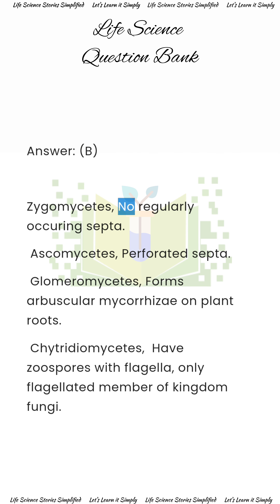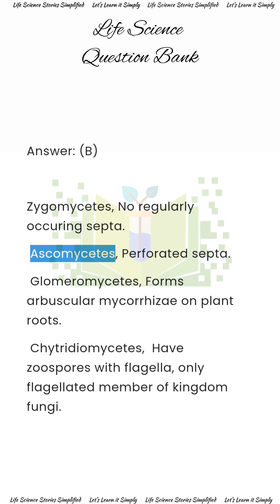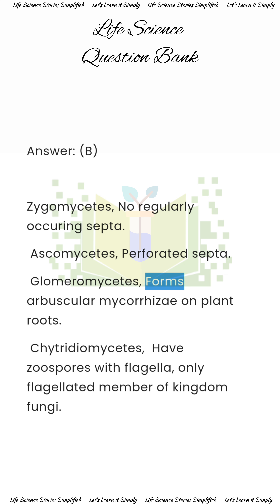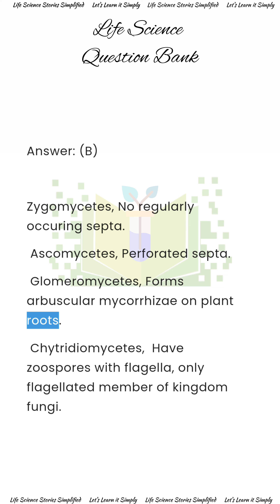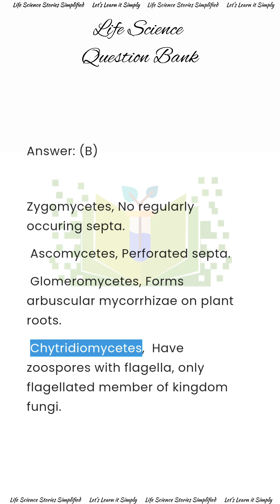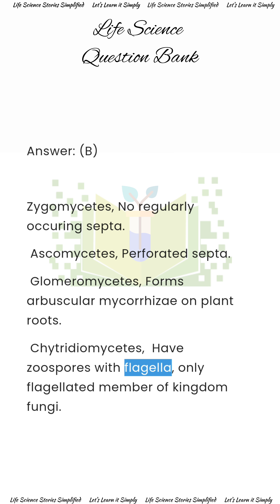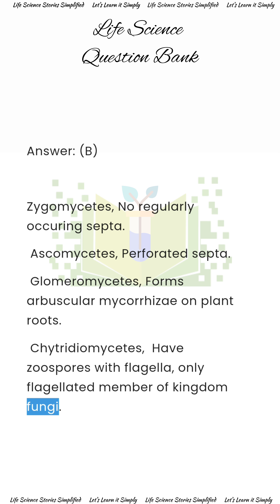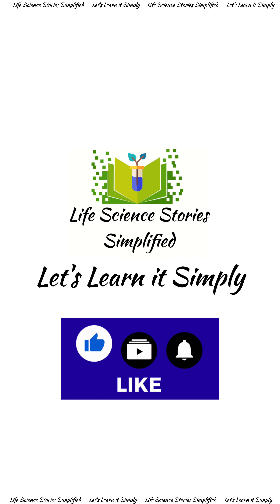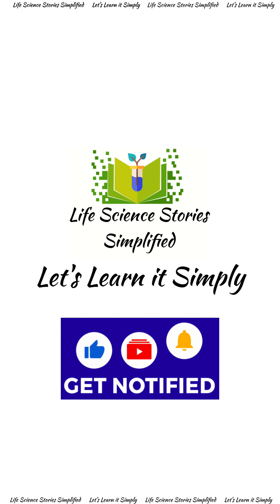Zygomycetes — no regularly occurring septa. Ascomycetes — perforated septa. Glomeromycetes — form arbuscular mycorrhizae on plant roots. Chytridiomycetes — have zoospores with flagella; only flagellated member of kingdom Fungi.